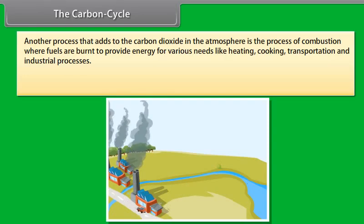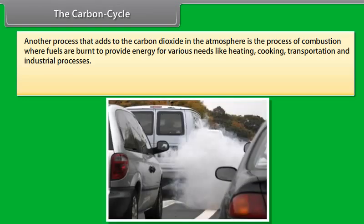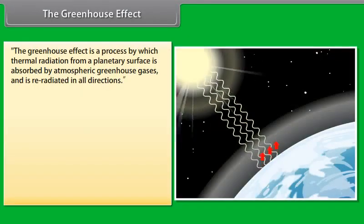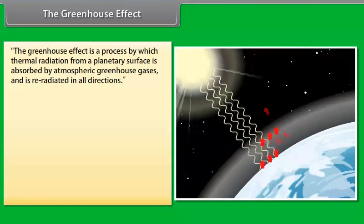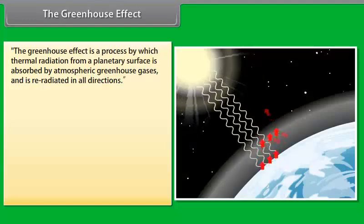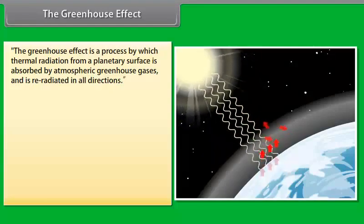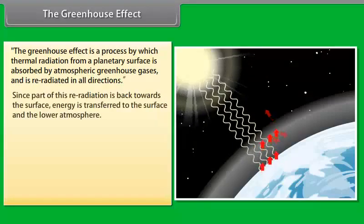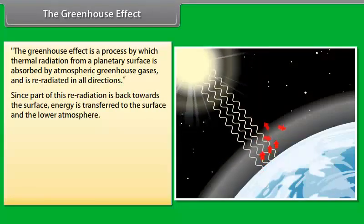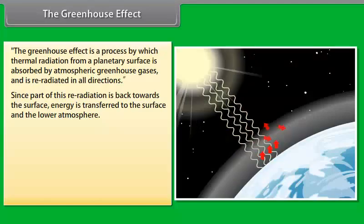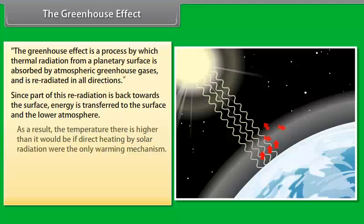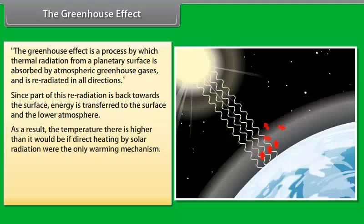The utilization of glucose to provide energy to living things involves the process of respiration in which oxygen may or may not be used to convert glucose back into carbon dioxide which then goes back into the atmosphere. Another process that adds to the carbon dioxide in the atmosphere is the process of combustion where fuels are burnt to provide energy for various needs like heating, cooking, transportation and industrial processes. The percentage of carbon dioxide in the atmosphere is said to have doubled since the industrial revolution when human beings started burning fossil fuels on a very large scale.